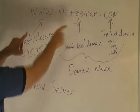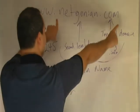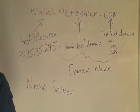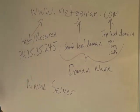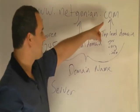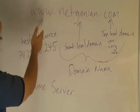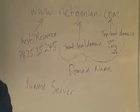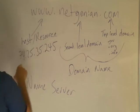Instead, we use something like a URL, or Uniform Resource Locator. This URL breaks down into a first part, which is a domain name, and a last part, which is the name of the host or resource that we're trying to contact. That host or resource is attached to the Internet at an IP address. The domain name itself has two parts: a top-level domain like .com, and a second-level domain. It could also have a third-level and fourth-level domain.